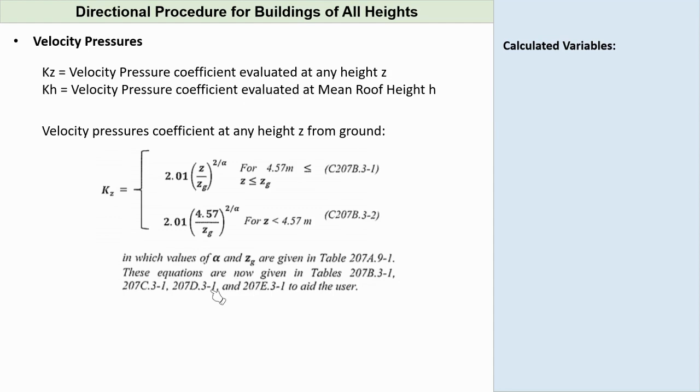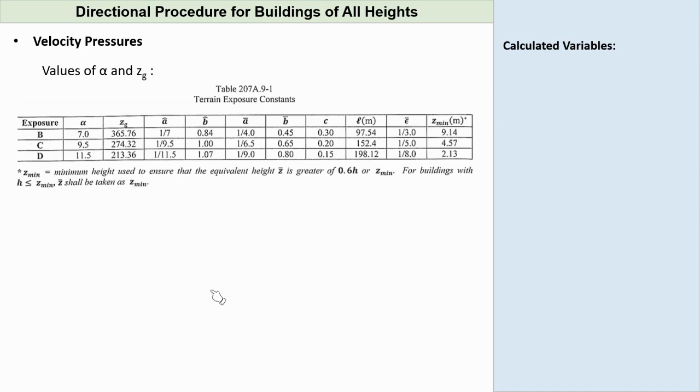For the values of z greater than or equal to 4.57 meters, Kz can be taken equal to 2.01 times z over zg raised to 2 over alpha. If z is less than 4.57 meters, then Kz is equal to 2.01 times 4.57 over zg raised to 2 over alpha. In which values of alpha and zg are given in Table 207A.9-1. Going to that table, our exposure type is C, and we're looking for the values of alpha and zg. We can easily find alpha equal to 9.5, and zg equal to 274.32.